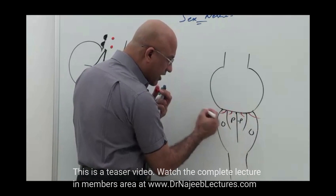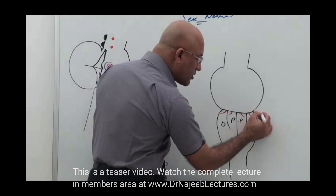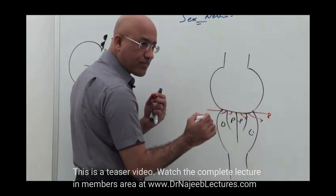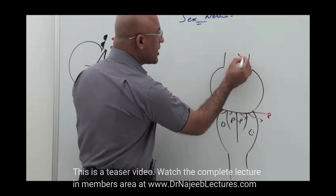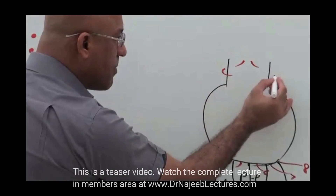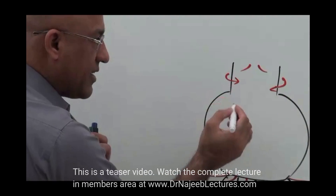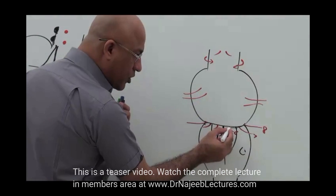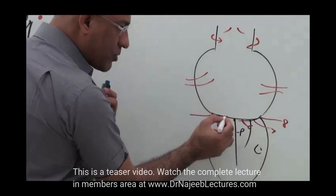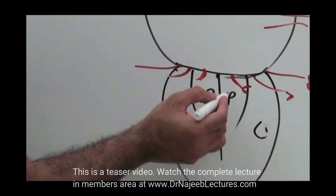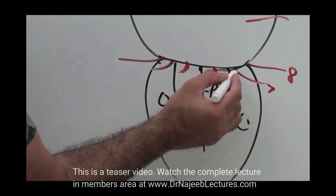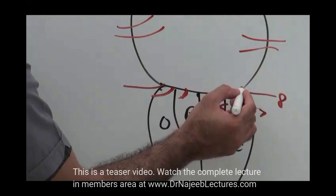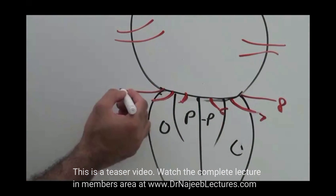The seventh nerve emerges slightly more laterally, and the lateral-most is the eighth nerve. So: sixth, seventh, eighth nerve. The third nerve emerges from the midbrain; the fourth nerve comes from the back; the fifth nerves emerge from the mid-pontine area; the sixth is at the pontomedullary junction, most medial, between the lower pons and above the pyramid; then seventh nerve lateral to sixth; and lateral-most is the eighth nerve.